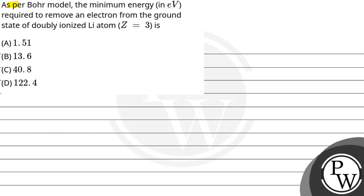Let us read the question: as per the Bohr model, the minimum energy in electron volts required to remove an electron from the ground state of a doubly ionized lithium atom (Z = 3) is — options are 1.51, 13.6, 40.8, or 122.4 electron volts. Which one is correct?